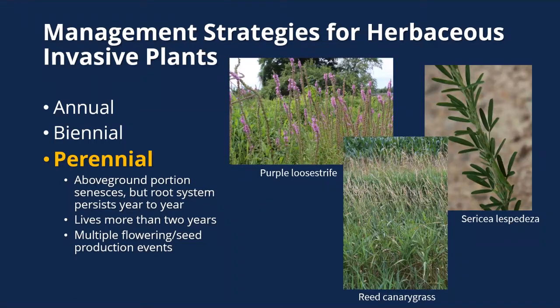For perennials, the continuation of the population year to year is not reliant on seed production. In fact, they can take many years off from seed production, relying on plants living through their root systems or spreading through rhizomes. Several perennial herbaceous invasive plants basically never set seed and only spread through asexual means. Examples include purple loosestrife, sericea lespedeza, and reed canary grass.